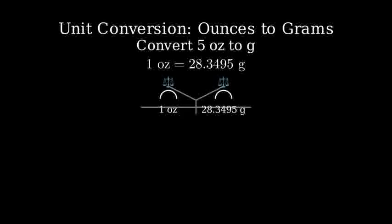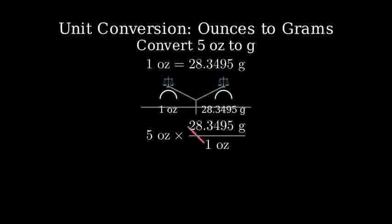Now to convert 5 ounces to grams, we'll multiply 5 ounces by our conversion factor. We can write this as 5 ounces times 28.3495 grams per ounce. Notice how we write the units.